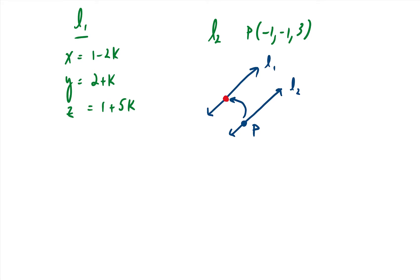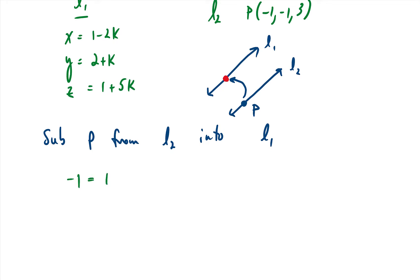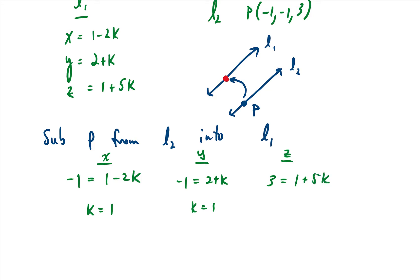Let's check by substituting the point from line two into the parametric equation for line one. For x: negative 1 equals 1 minus 2k, giving k equals 1. For y: negative 1 equals 2 plus k, also giving k equals 1. For z: 3 equals 1 plus 5k, giving k equals 2/5. We have a problem — while x and y gave k equals 1, z gave k equals 2/5. The third parameter should also have been k equals 1. This tells us the lines are parallel and distinct, meaning there are no points of intersection.